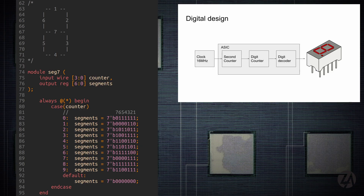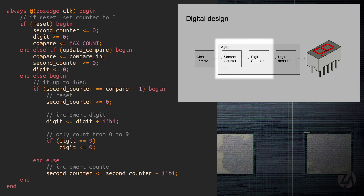In the old days we'd have to take these little blocks and draw them out by hand, but now we can use a hardware description language like Verilog, so we can use some code to describe the hardware we want. This is the code we need to convert a decimal number into the correct outputs to show the number on the display. Here we add some flip-flops to be able to store how many clock cycles have passed.